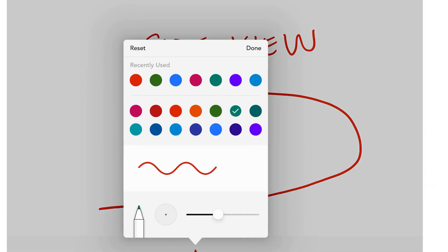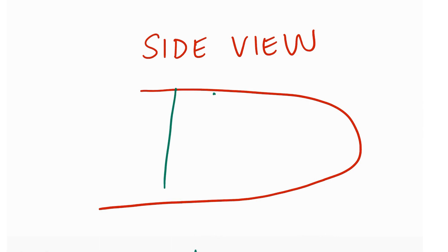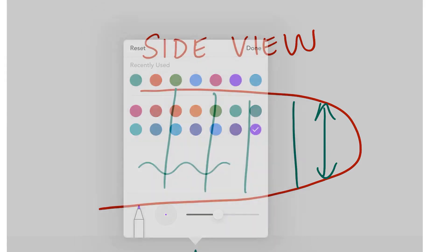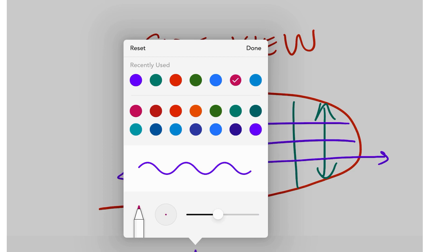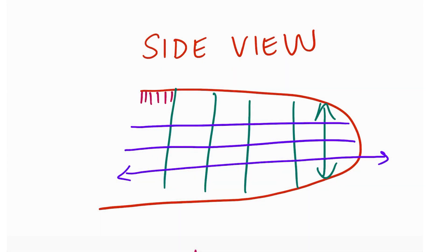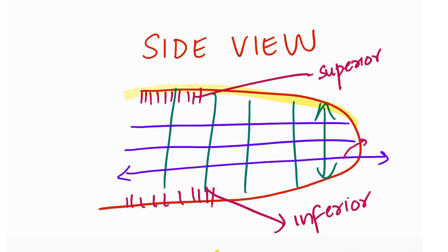Coming to intrinsic muscles, we're looking at the tongue from the side view. The verticalis broadens and flattens the tongue. The transverse fibers narrow and elongate the tongue. Then we have superior and inferior longitudinal muscles. Superior longitudinal muscle fibers make the superior part of the tongue convex, and inferior fibers make the inferior part concave.